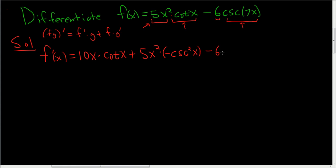Minus 6 times the derivative of cosecant. Now here we have to use the chain rule. So the derivative of cosecant is negative cosecant 7x cotangent 7x times 7, right, that's the derivative of the inside.